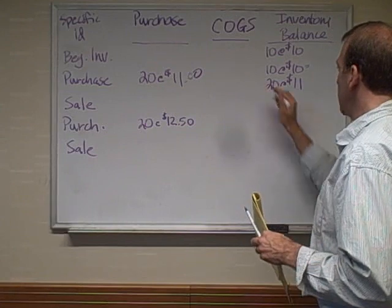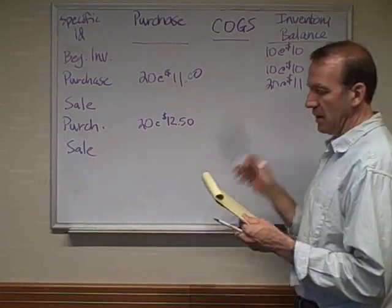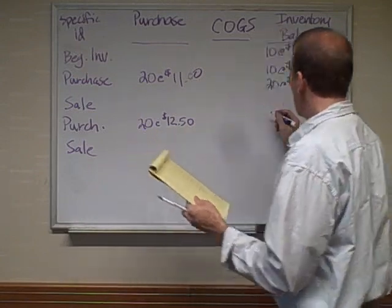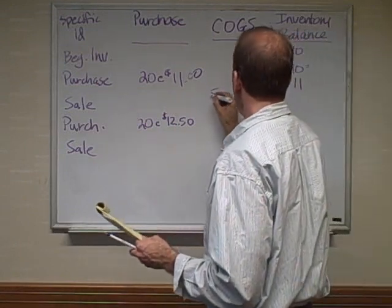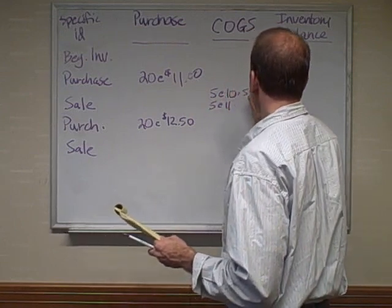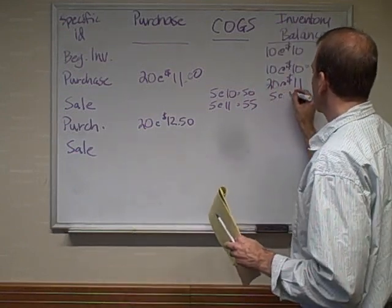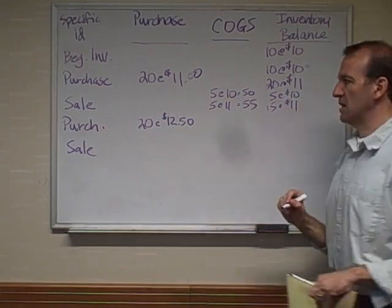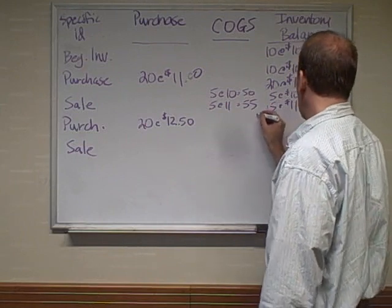So we've got inventory of 10 at $10 and 20 at $11, and now we're selling 10 of them. Let's say we sold 5 of each — 5 of the $10 ones and 5 of the $11 ones. That's $50 and $55. So what do we have left? We've got 5 left at $10 and 15 left at $11. Now we're purchasing 20 at $12.50.